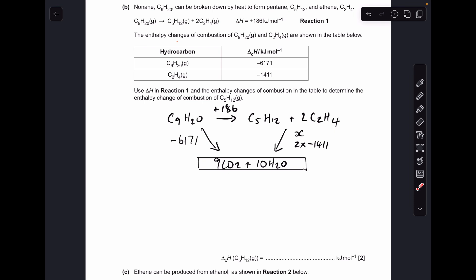So basic Hess's law, we've got two routes going from C9H20 to C5H12 and two C2H4s. So we can go that way or we can go this way here. So that enthalpy change there is equal to that one minus this one, because this arrow here is going in the wrong direction for this alternative route.